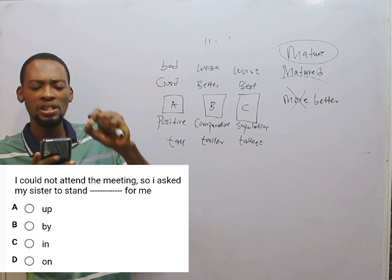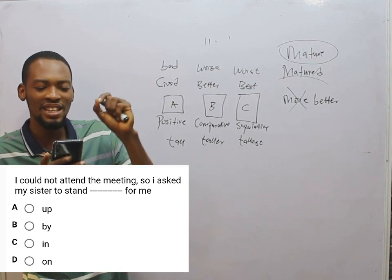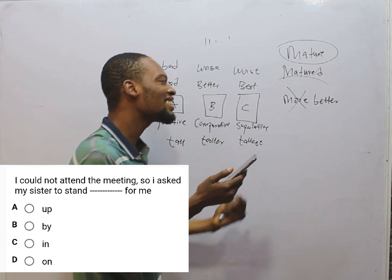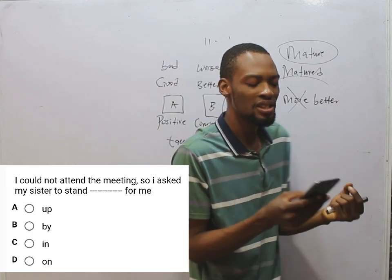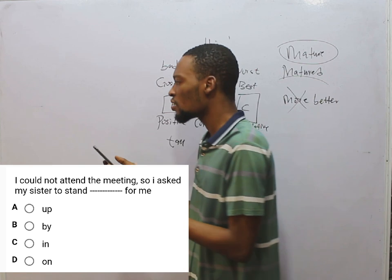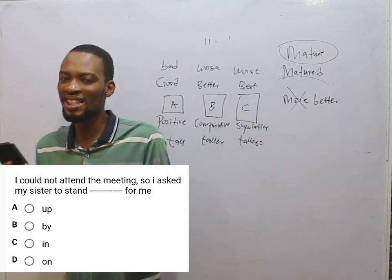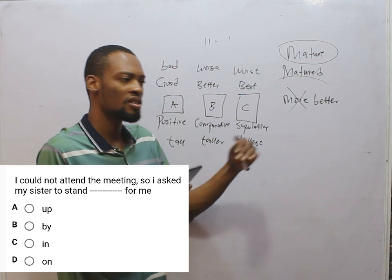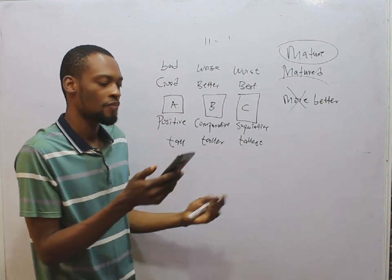I could not attend the meeting, so I asked my sister to stand dash for me. Stand in is correct — stand in means to represent. I asked my sister to stand in for me. Stand out, on the other hand, means to be outstanding or unique.